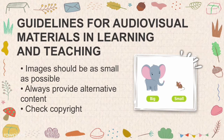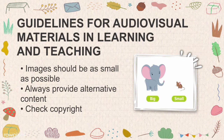The guidelines for audiovisual materials in learning and teaching: first, images should be as small as possible — smaller images are more space-friendly. Second, always provide alternative content — we won't know if a file or video will get lost, so always read other related content, as the alternative might contain information the primary content is lacking. Third, check copyright — always research the owner to avoid bad consequences in the future.